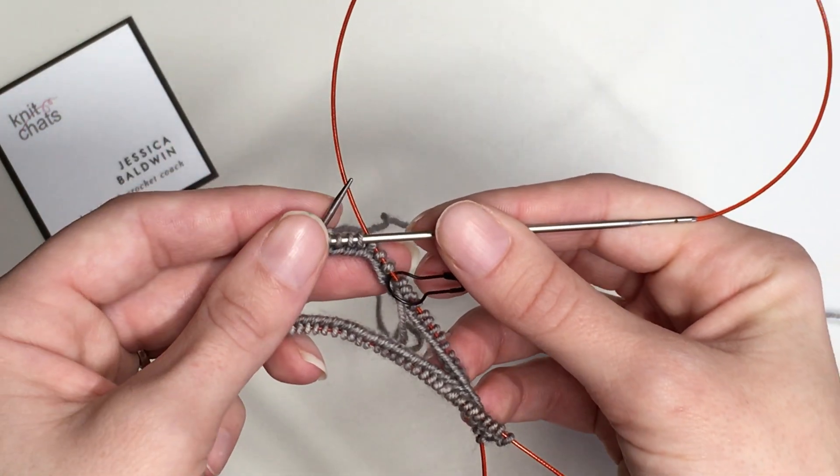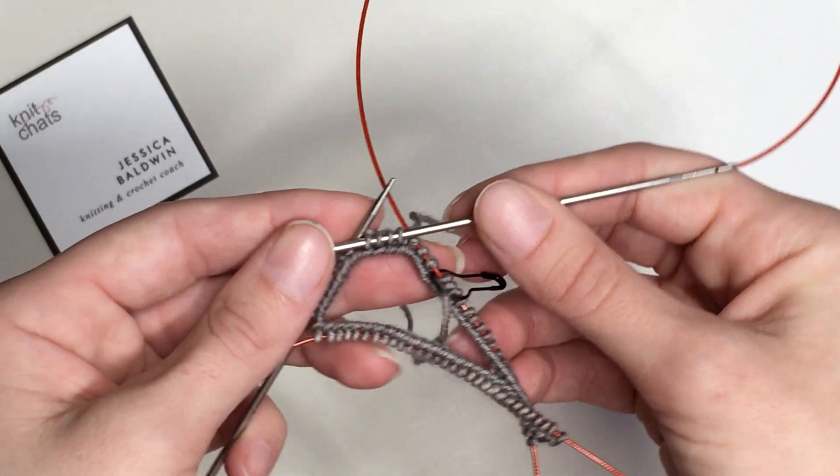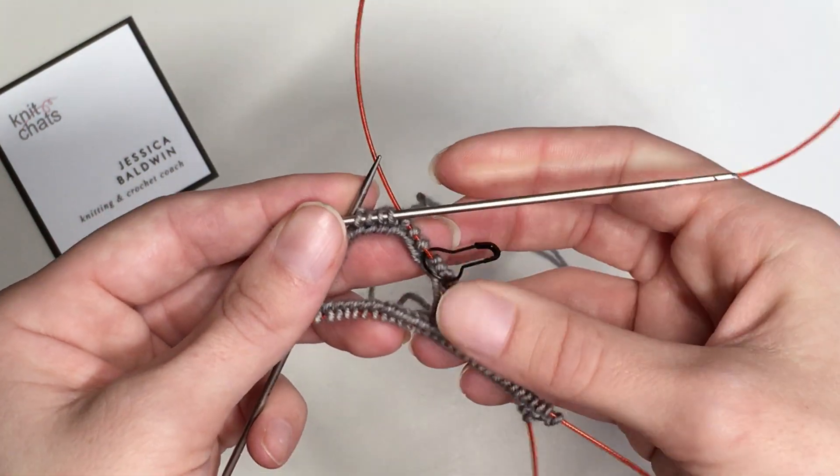That is joining in the round magic loop for right-handed knitters.